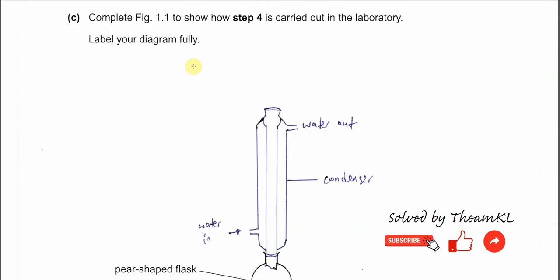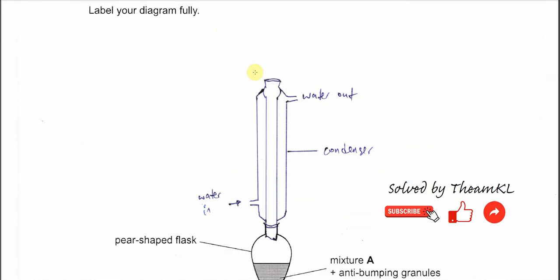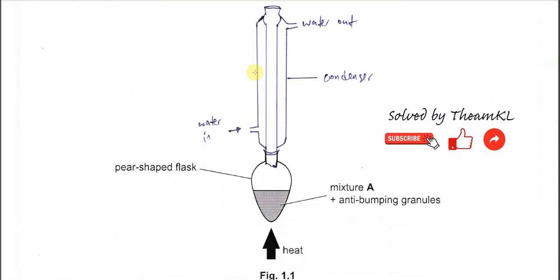Part C, complete figure 1.1 to show how step 4 is carried out. Step 4 is reflux. You need to draw the diagram and label. In this diagram, you only need to add the condenser. The condenser needs to directly connect to this pear-shaped flask. You need to draw this tube, this inner tube. The inner tube is for condensation. The outer tube here, this part and this part, is for cooling.